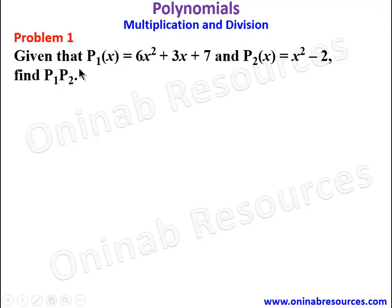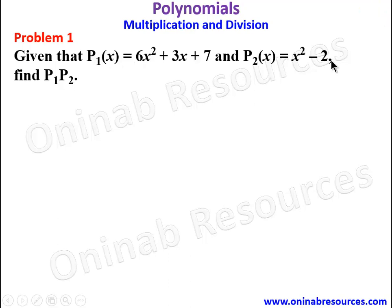Problem 1. Given that p1 of x is equal to 6x squared plus 3x plus 7 and p2 of x is equal to x squared minus 2, find p1 times p2. So to find p1 p2 we are going to multiply p1 by p2.